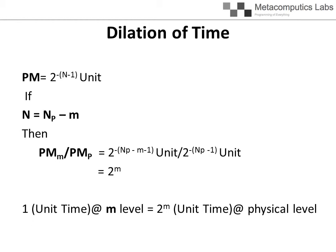Suppose the physical universe is produced by the meta-computation system operating with a value Np. PM in the physical level of creation is of the value PMp. We call present moment at the level of creation that is m level higher than the physical universe level PMm. Then PMm divided by PMp equals 2^m. PM at level m is 2^m times that of the physical level creation.